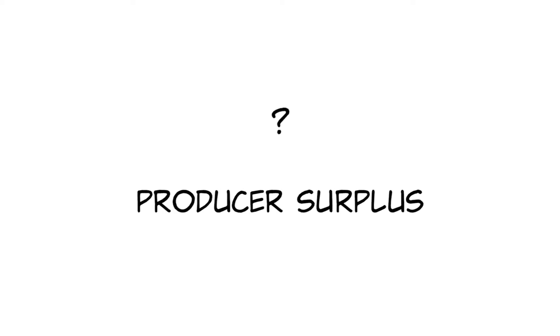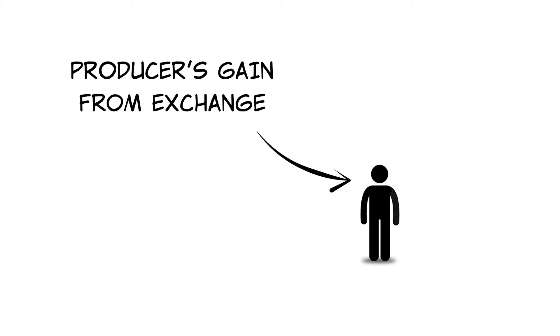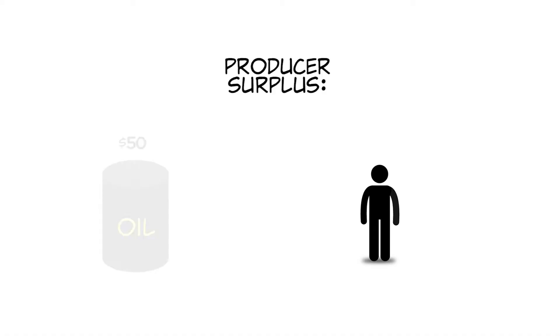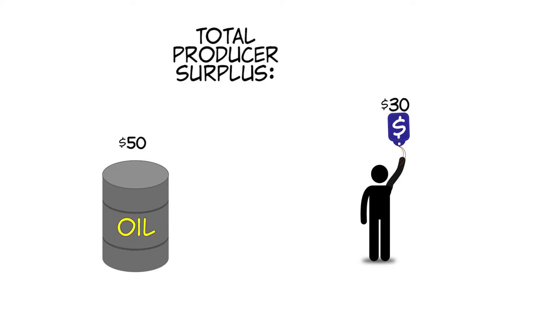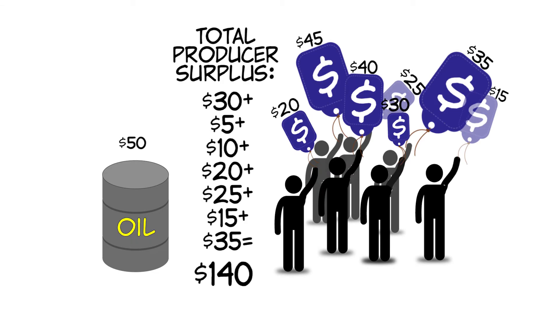What is producer surplus? Producer surplus is the producer's gain from exchange. It's the difference between the market price and the minimum price at which producers would be willing to sell a given quantity. Total producer surplus is the sum of the producer surplus of all sellers.